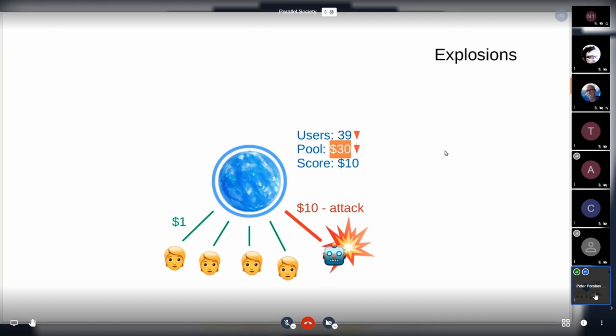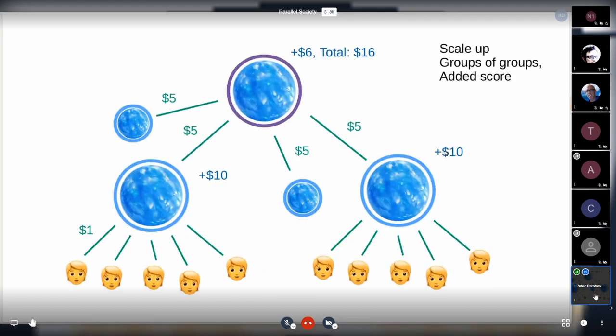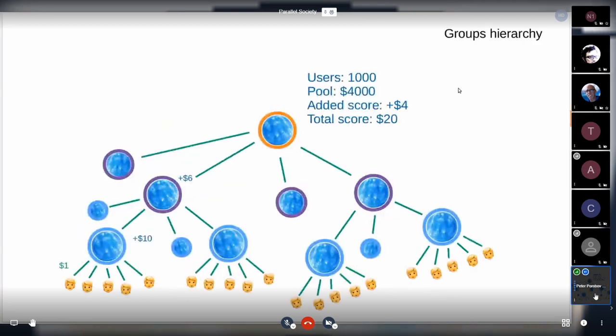How do we scale? A group may consist of not only users but groups as well. We can see here the group from the previous slide and this higher hierarchy group - a group of groups. This group may add another $6 to a user score, and everyone beneath that group receives a score of total of $16.